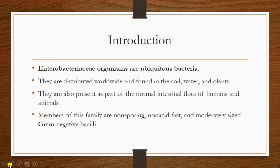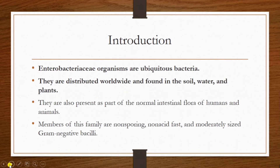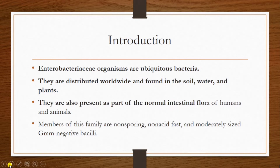Enterobacteriaceae organisms are ubiquitous in nature, which means they are widely distributed in the soil, water, and plants. They are also present as part of the normal intestinal flora of humans and animals. The bacteria in this family, except Salmonella and Shigella, are normal inhabitants of the intestinal flora of both humans and animals.